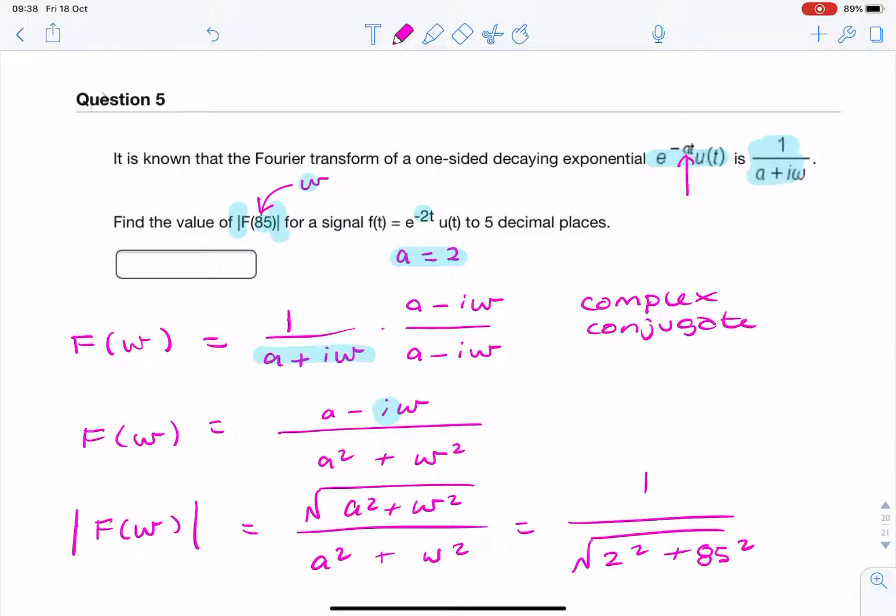Put that in the calculator, and end up with your answer, 0.017117. And to 5 decimal places, 6. And that's your final answer.